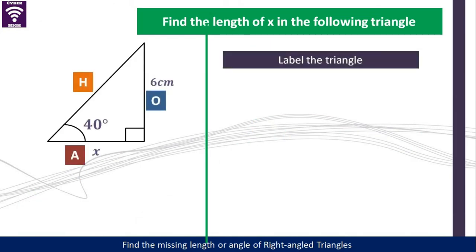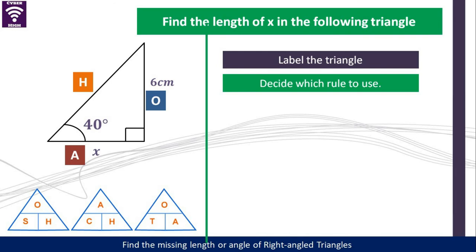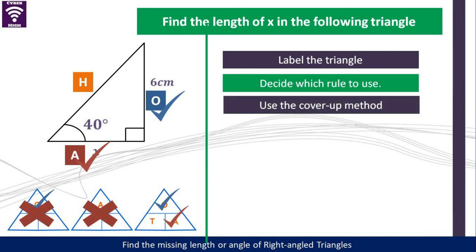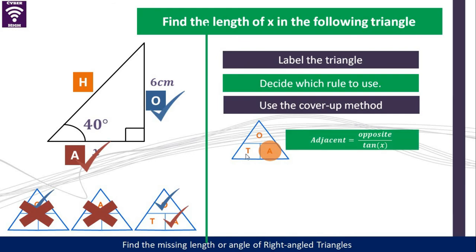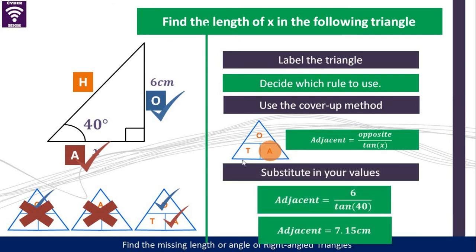We have the opposite, so we tick where we have the opposite — which means cosine goes off. Now we are looking for X, which is the adjacent. So we tick where the adjacent is, which means we are using the tangent rule. We cover A, so the adjacent is equal to the opposite over the tangent of X. Substitute and get our answer: 7.15. Well done if you got this correct. If you made a mistake, it's okay — don't let this opportunity pass without learning from your mistakes. Mistakes are part of learning.